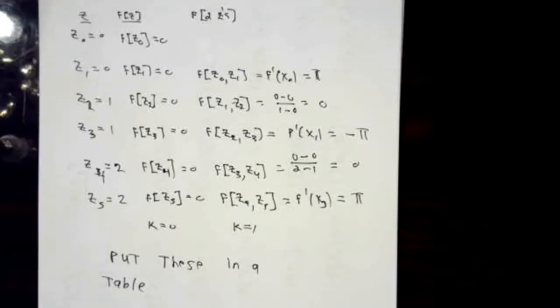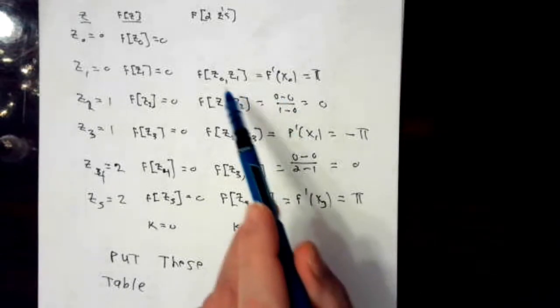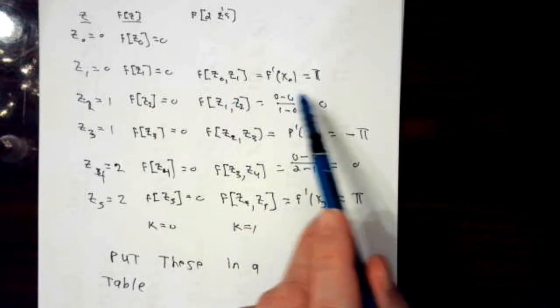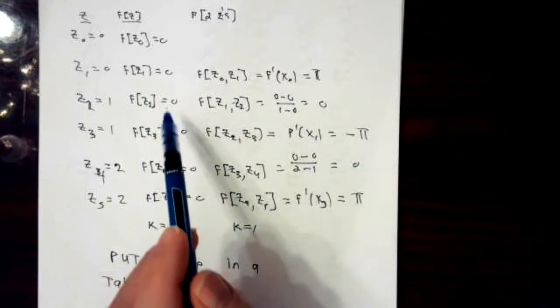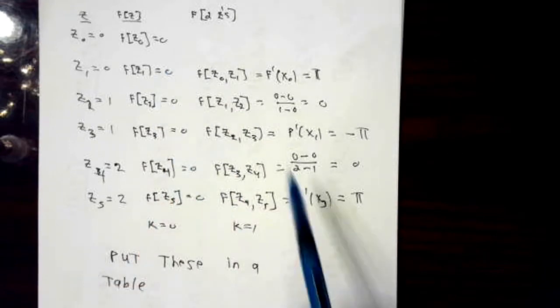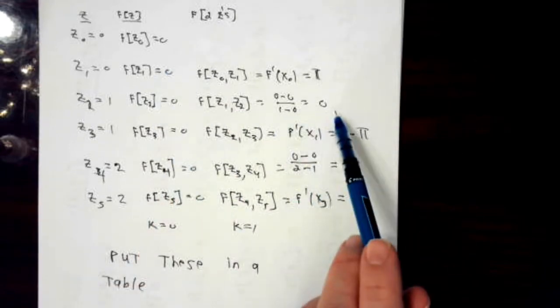Now, as we said, column k equal 1 requires special treatment. So I've written out in detail what we said we're going to do. This first number is a derivative value, which we said was π. This one is 0 minus 0, divided by 1 minus 0, which is 0.